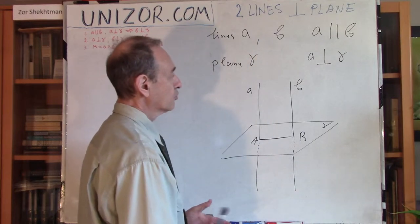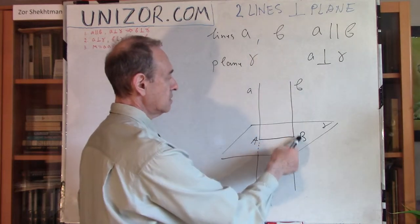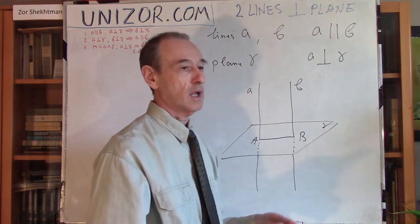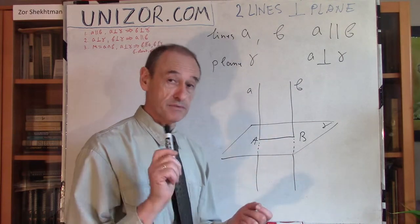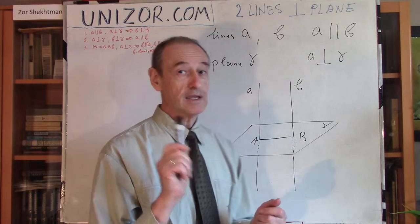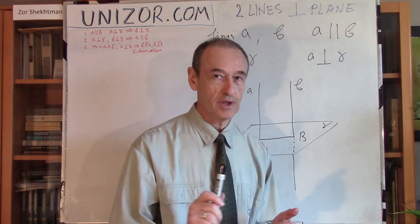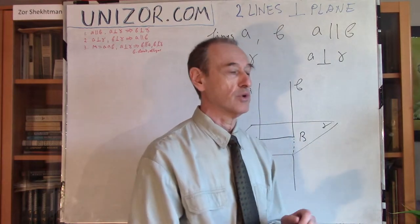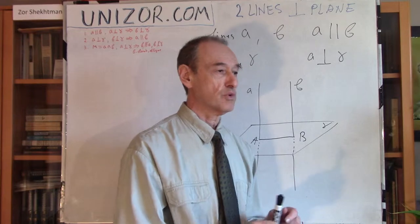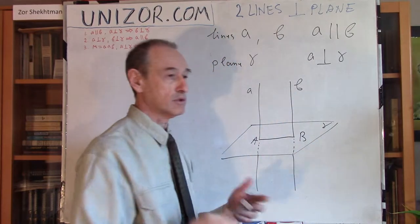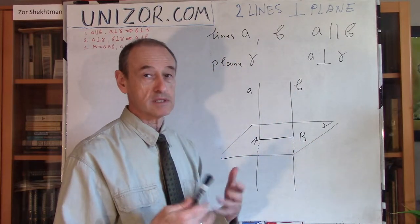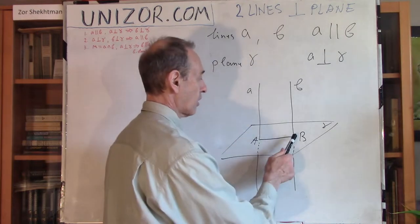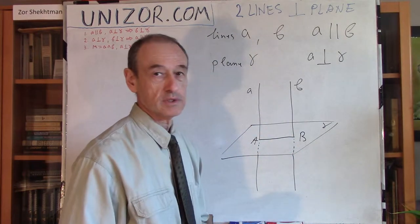Now, to prove that line B is perpendicular to gamma, it is sufficient to prove — note: sufficient, not necessary — that line B is perpendicular to at least two lines on the plane which pass through the same point of intersection.